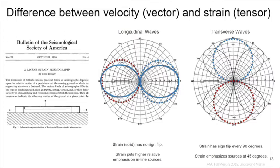For transverse waves, if we have a 90-degree rotation of our sensor, we expect a complete sign flip at the same amplitude — something totally different from a velocity sensor. Additionally, the strain measurement emphasizes sources at 45-degree angles instead of at 90 and 270 degrees, so we're emphasizing different sources. It's important to consider how this affects our results for seismic imaging and earthquake detection.